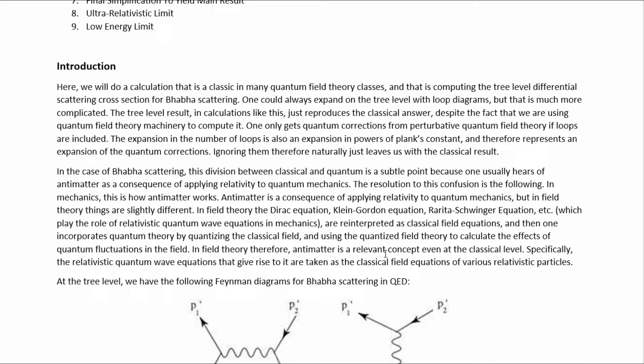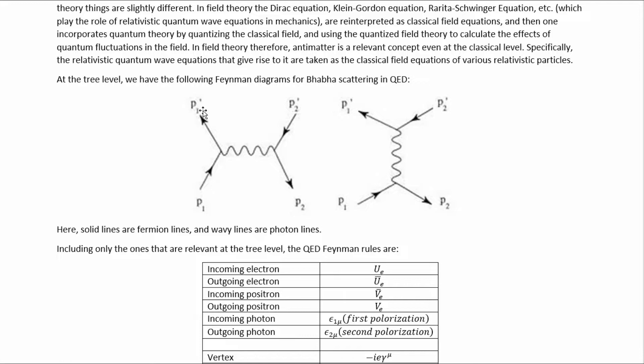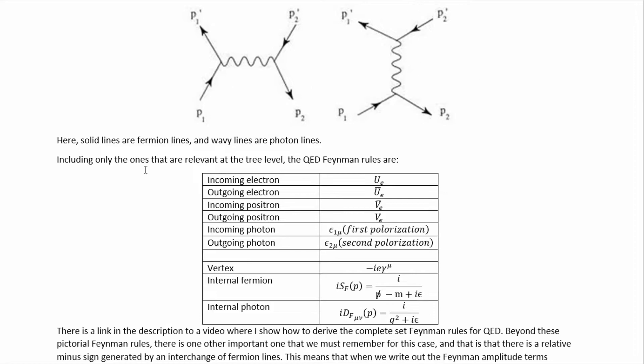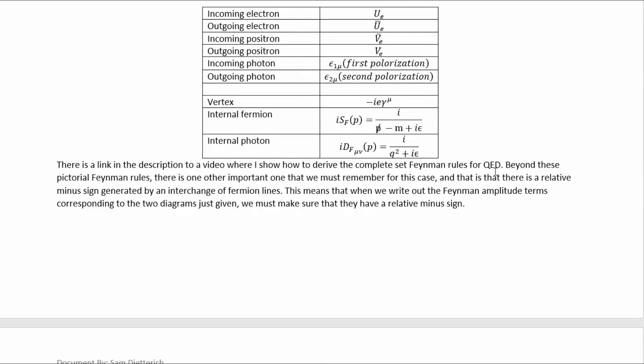In field theory, therefore, antimatter is a relevant concept even at the classical level. At the tree level, we have these two Feynman diagrams for BABA scattering in quantum electrodynamics, where the solid lines are the fermion lines. Specifically, forward-in-time arrows represent electrons and backwards-in-time arrows represent positrons. Including only the ones relevant at the tree level, the QED Feynman rules are given here. There is a link in the description to a video where I show how to derive the complete set of Feynman rules for QED.